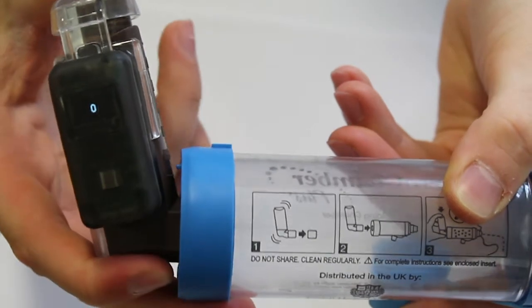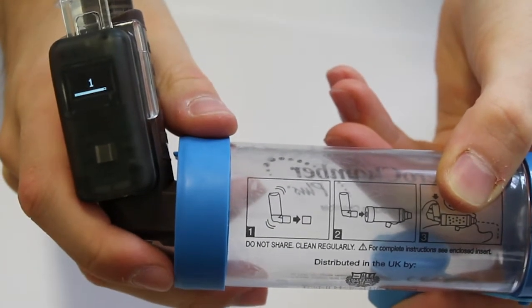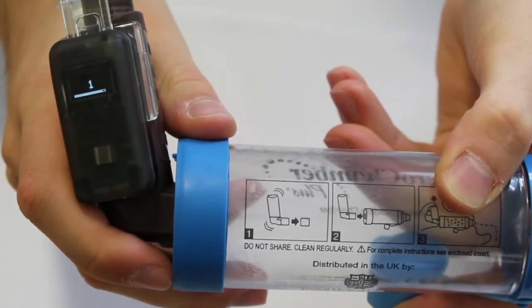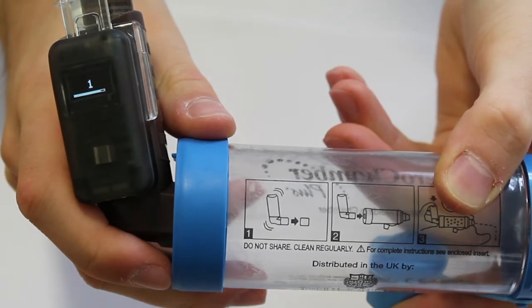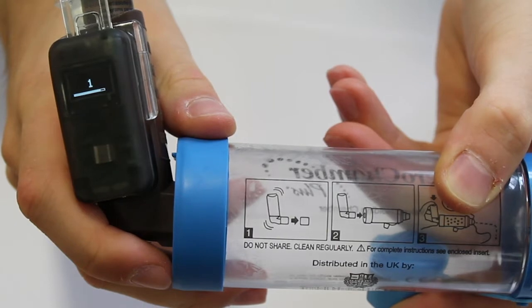Puff clicker will buzz and display an increased count once you've taken a dose. A progress bar will empty over the course of 30 seconds. Wait until the bar is empty before shaking the inhaler and taking another dose.